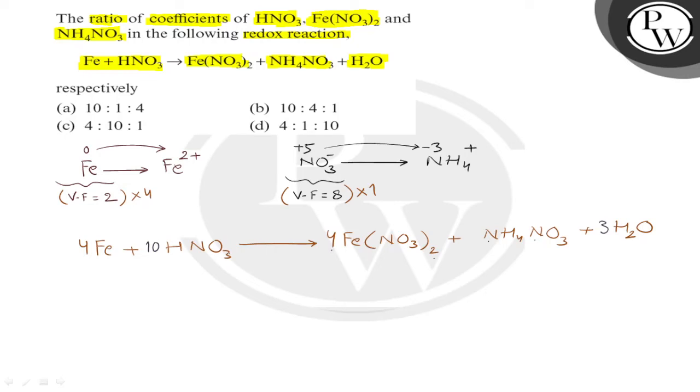We have balanced this reaction by using oxidation reduction method. Now, what are required ratio? We need to know ratio of coefficients of HNO3, Fe(NO3)2 and ammonium nitrate. What are these values? For HNO3 it is 10, for ferrous nitrate it is 4 and for ammonium nitrate it is 1.